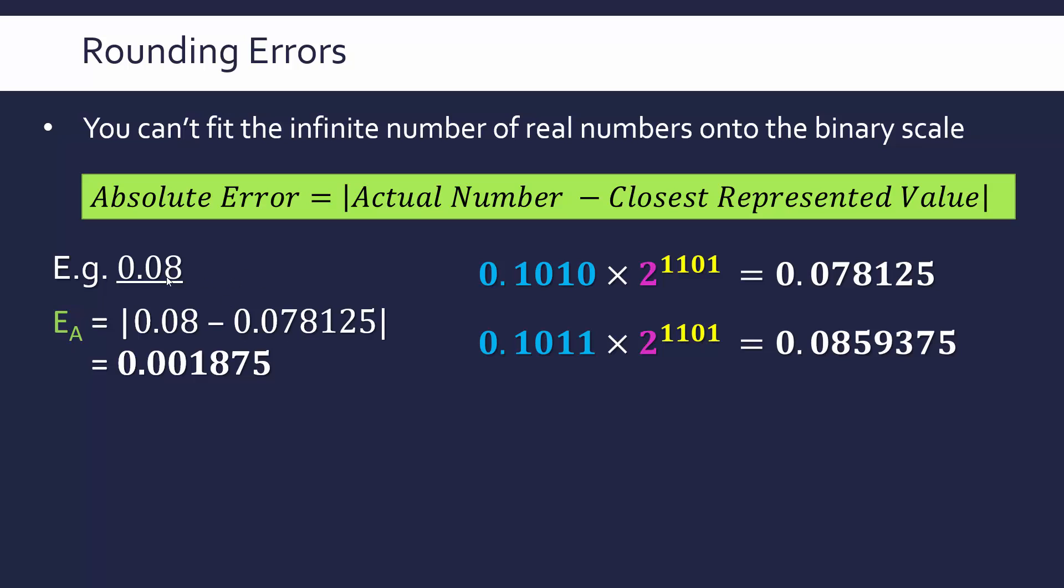So I plug in the numbers and we often write absolute error as E with a subscript. So I plug in my numbers and here they're going to be positive. So there's no negative value. But either way, my result is 0.001875. That is my absolute error when I'm trying to represent 0.08 using this floating point representation.